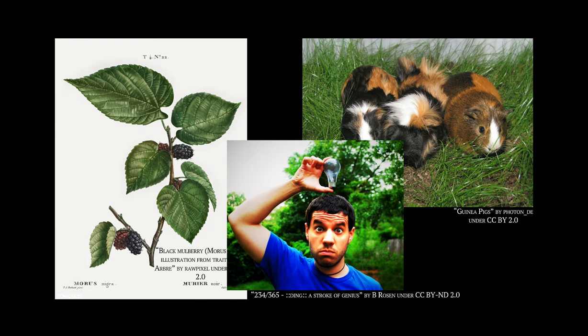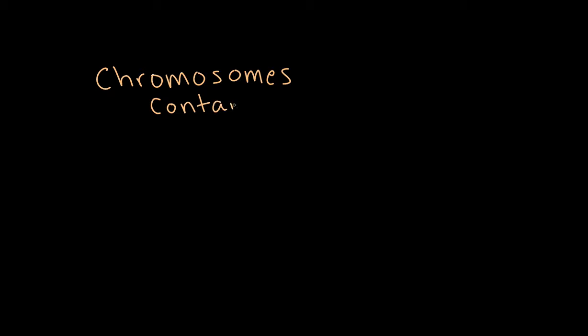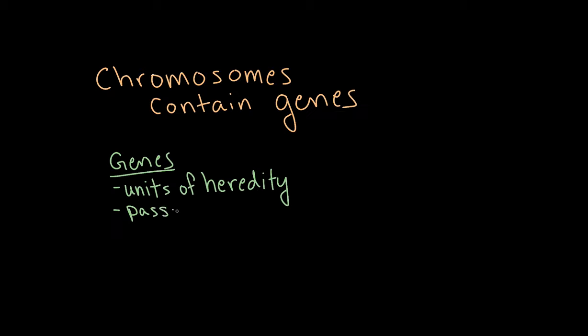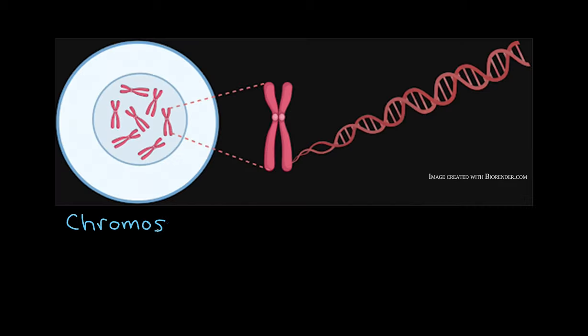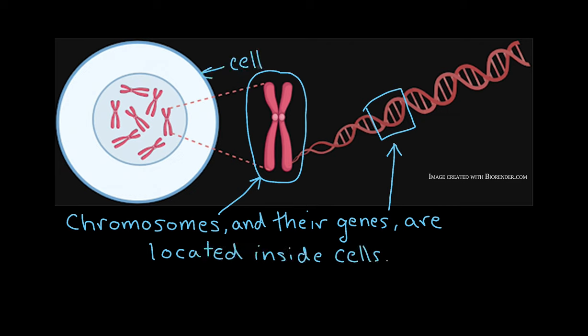Before I tell you the answer, let's learn a little more about chromosomes. Chromosomes are structures that contain an organism's genes. And genes are the units of heredity passed from parent to offspring that affect an organism's traits. Chromosomes, and the genes they contain, are located inside an organism's cells.